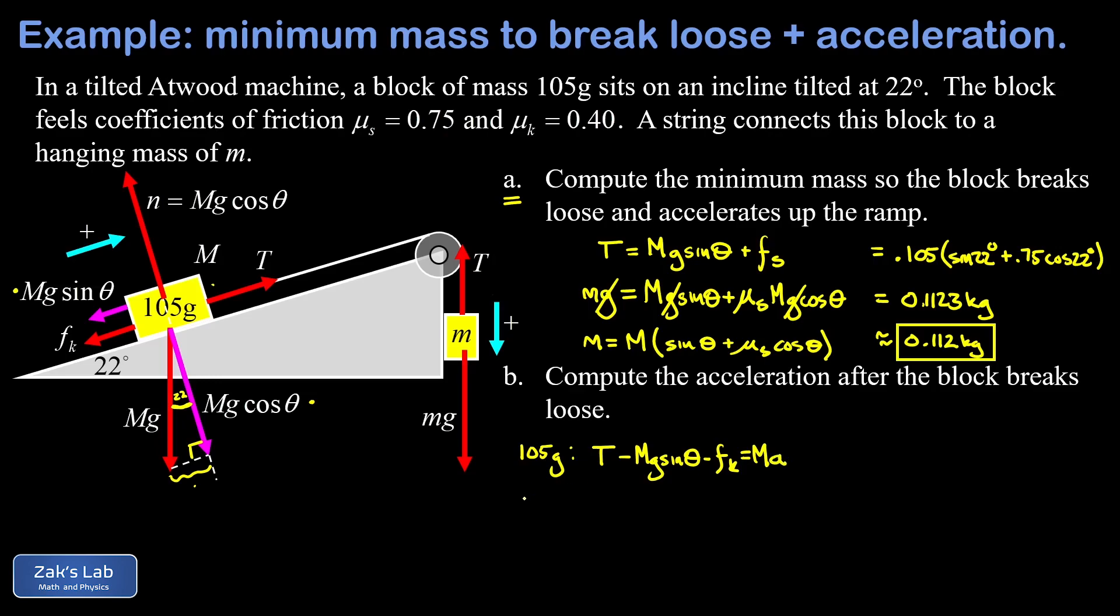We do the same thing for the hanging mass little m, which we actually know now is about 112 grams, and the positive direction is down for this guy so that we can have a positive acceleration just like the first equation. So I'm going to take little mg as my positive direction, T pointing in the negative direction. That's my net force, and that's equal to little m times a. So this is just F net equals ma on each moving piece.